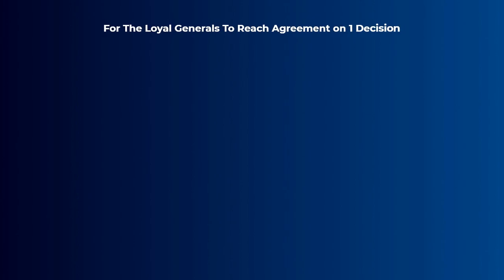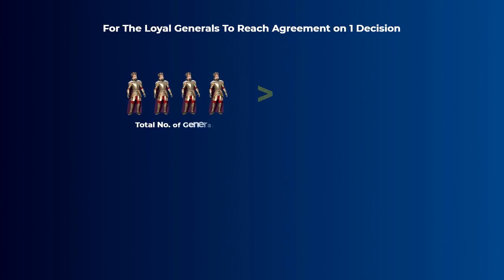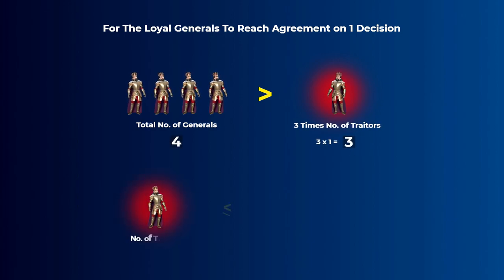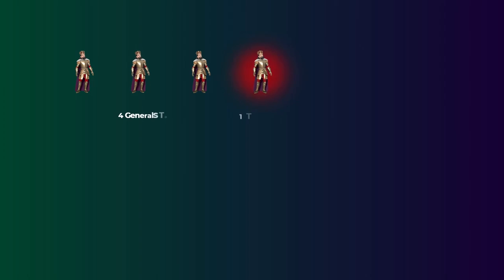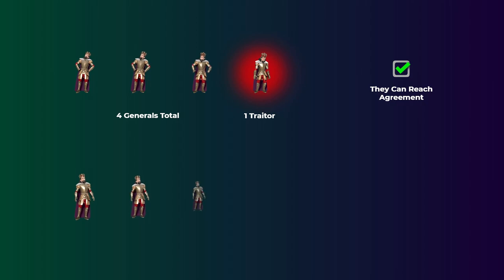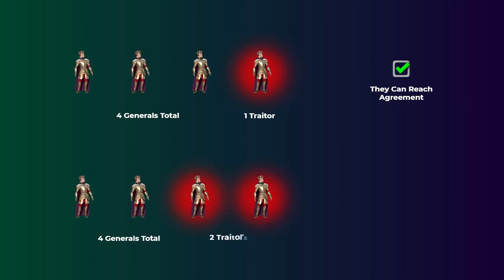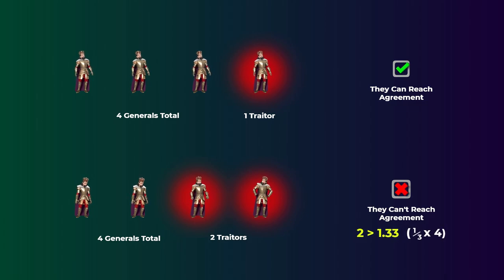The point to take from here is that for the loyal generals to reach agreement on a decision, the total number of generals needs to be more than three times the number of traitors. Put another way, the number of traitors cannot exceed one third of the total number of generals. So for example, if there are four generals, one traitor won't prevent the other three loyal lieutenants from reaching agreement on a decision. But if there are two traitors, the two loyal lieutenants won't be able to reach agreement, as two is more than a third of the four generals.